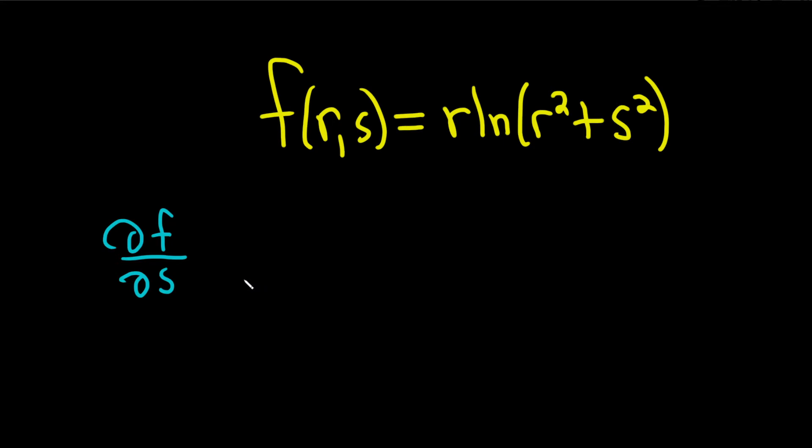So when you find a partial of a function with respect to a variable, you treat all of the other variables as constants. So here, this r is a constant. You pretend it's a number. So when we take the derivative, it's just going to hang out. It is a constant.